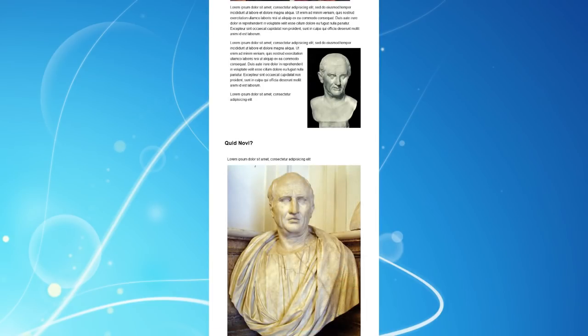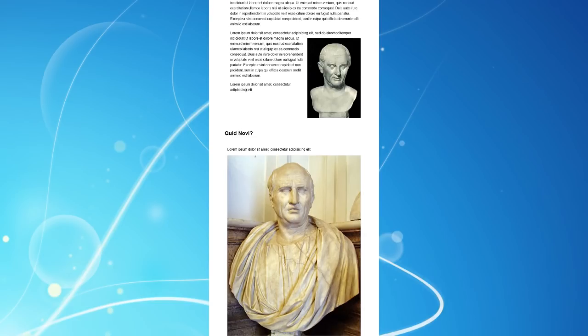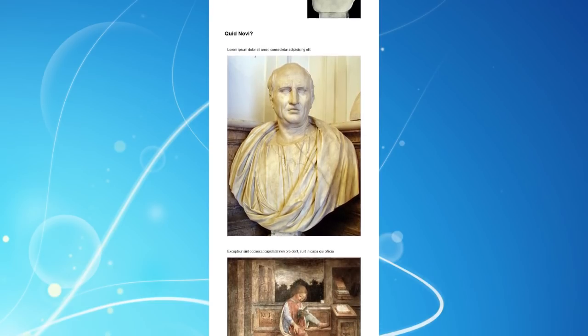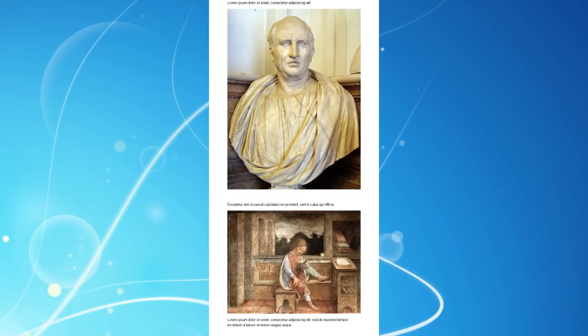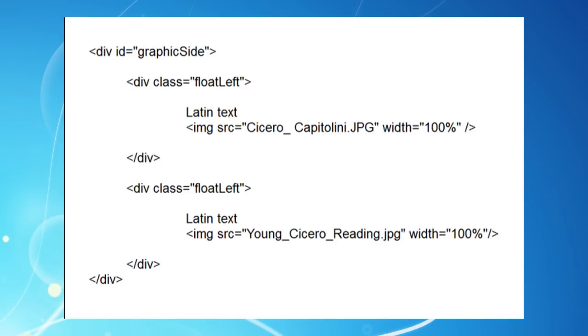But now we have another problem. Our images in graphic side are way too big, so instead of stacking them vertically, let's set them side by side instead. A slight complication here is that we want to include the text which goes with each image as well, so we'll add these bits of code to our div graphic side.